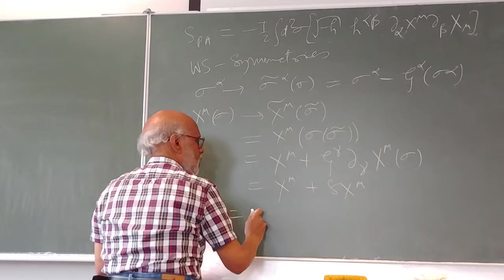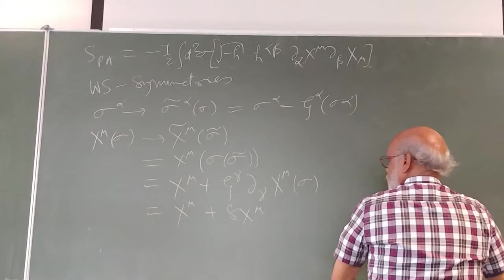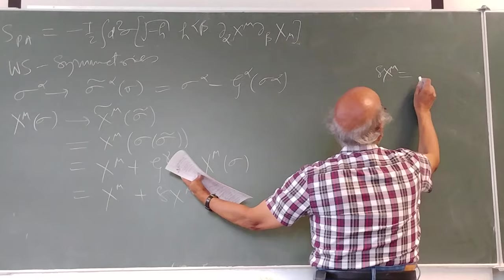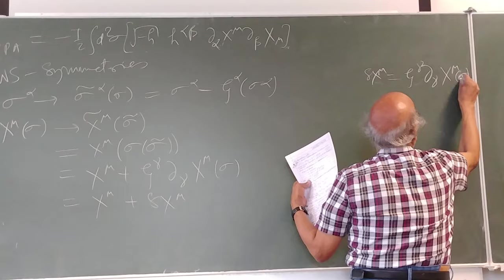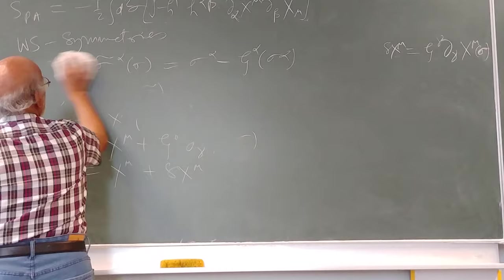Let me summarize it here. My δx^μ is ζ^γ ∂_γ x^μ of σ.